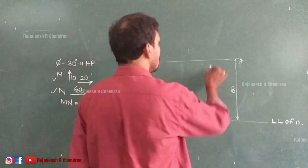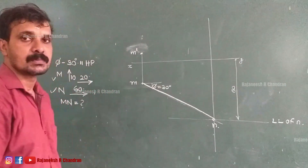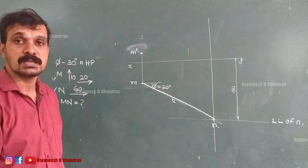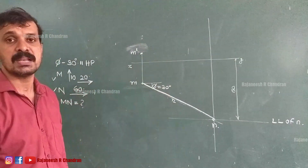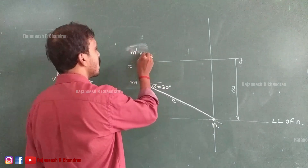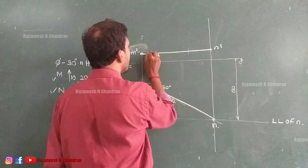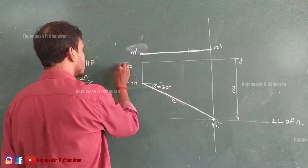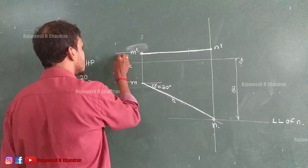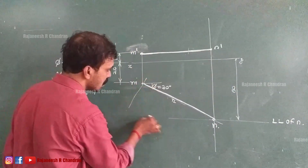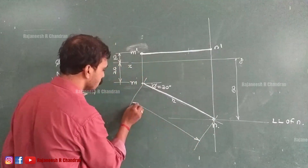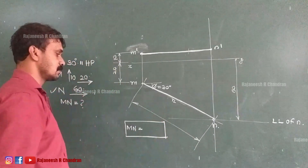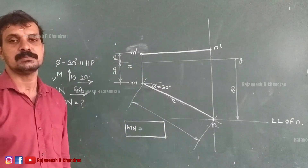Once you obtain n, draw a projector through n. Since the line is parallel to HP, its front view — the opposite projection — will be a line parallel to the XY line. So M dash is obtained and the front view M dash N dash is drawn parallel to XY. We can mark the dimensions: 20mm and 10mm for M, and 60mm is already marked. Measure and record the true length value — that is the true length of the line MN.